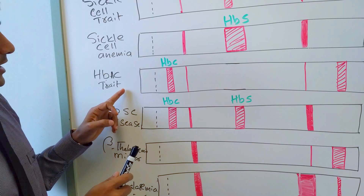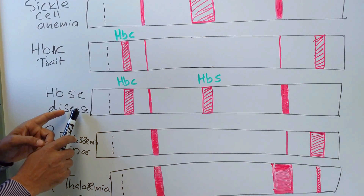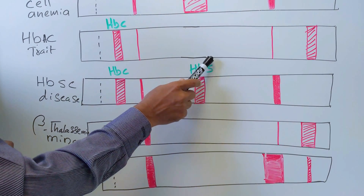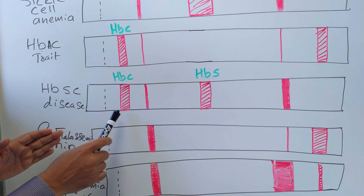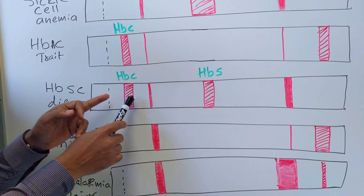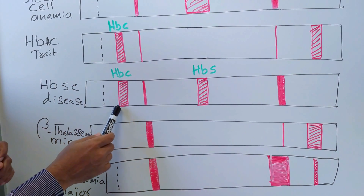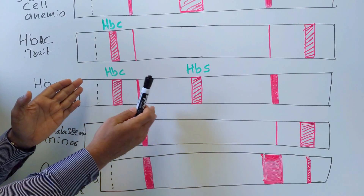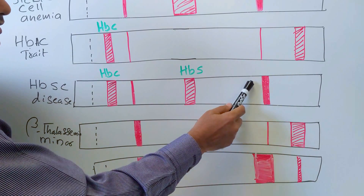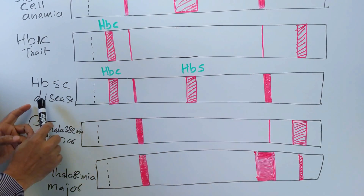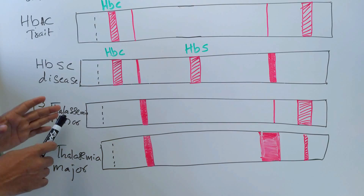HbSC disease is a compound heterozygote condition. One beta globin is of the sickle type — glutamate replaced by valine — so it stops in the middle, whereas the other beta globin is of HbC type — glutamate replaced by lysine, a positive charge — so it stays nearer to the cathode. Because no useful hemoglobin is synthesized, there is increased fetal hemoglobin and increased minor adult hemoglobin as compensation.